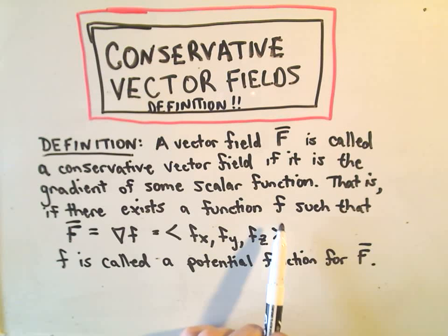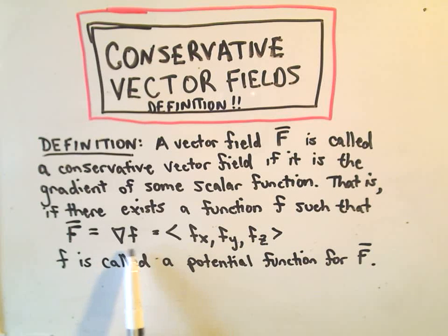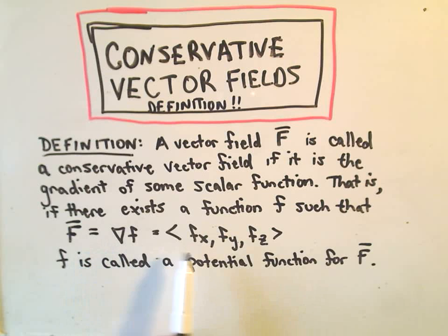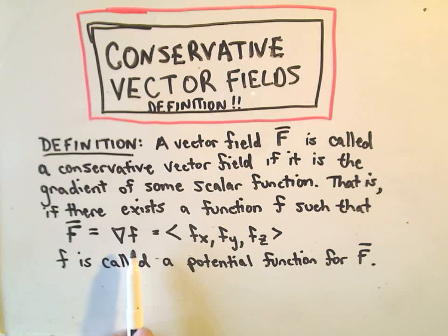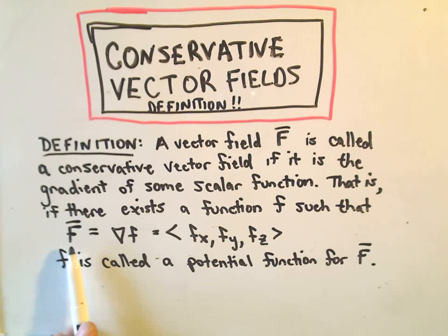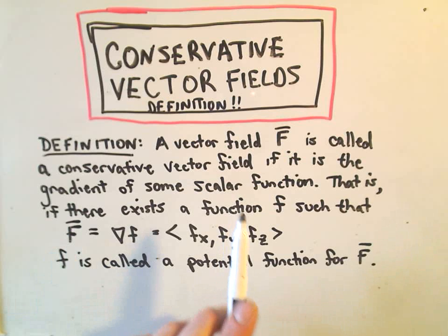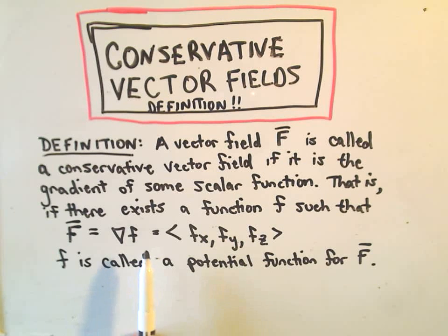What that means is there's some scalar function f such that when we take the partial derivative with respect to x, y, and z of that function and look at it as a vector function — if there exists such a scalar function, we say the capital F is a conservative vector field. This little function f is what's called a potential function.